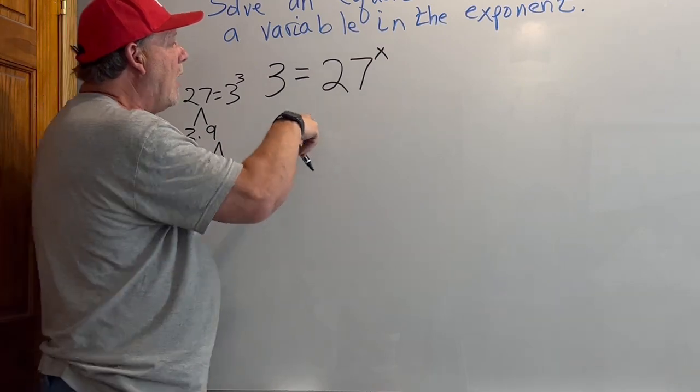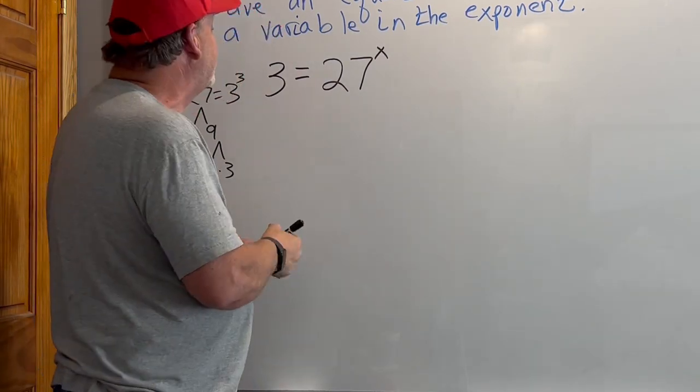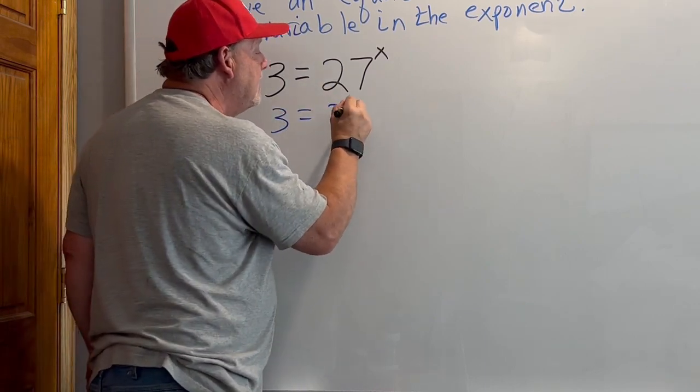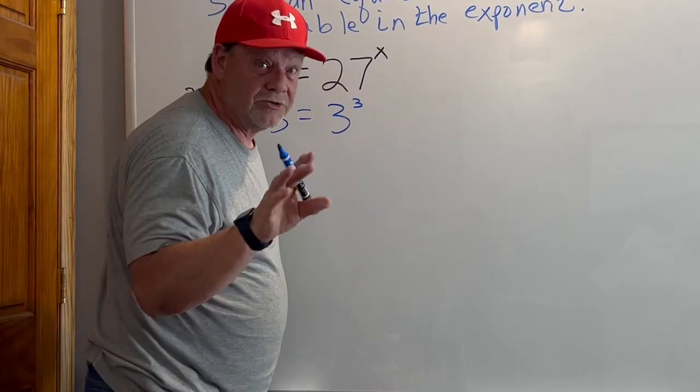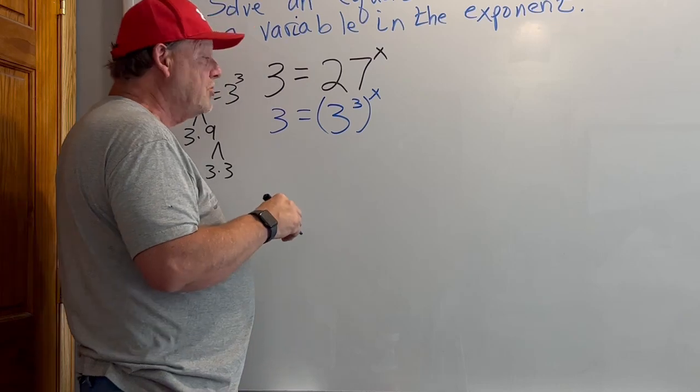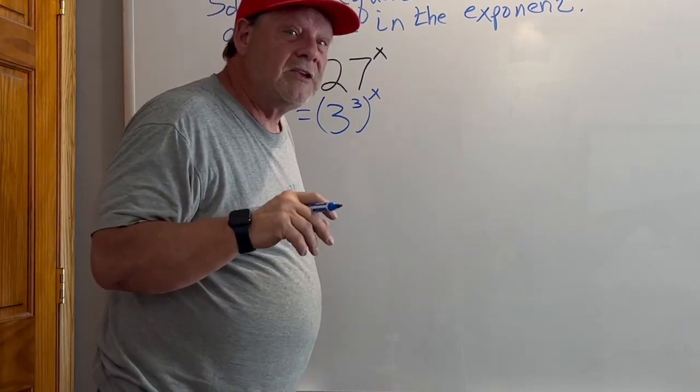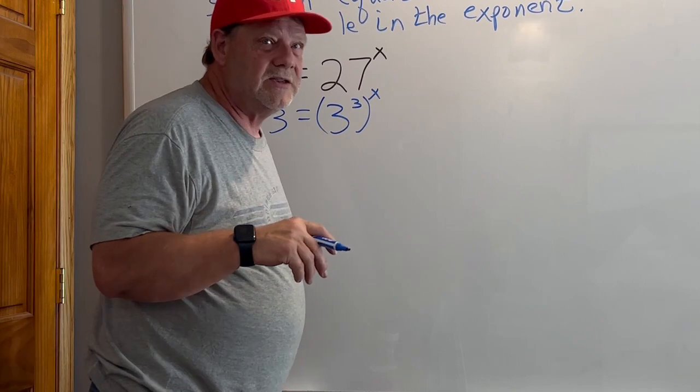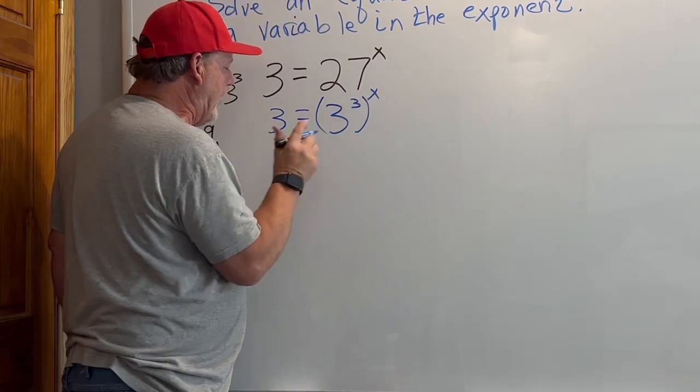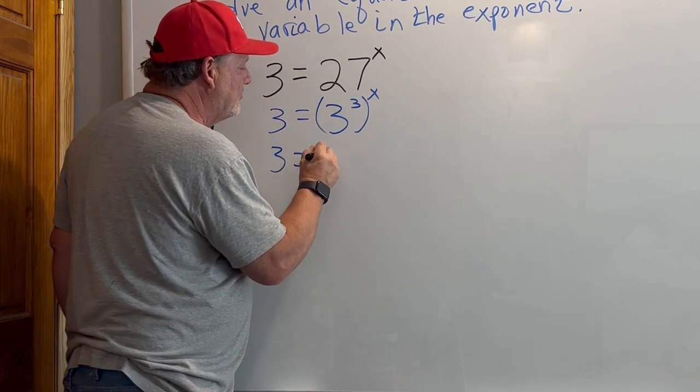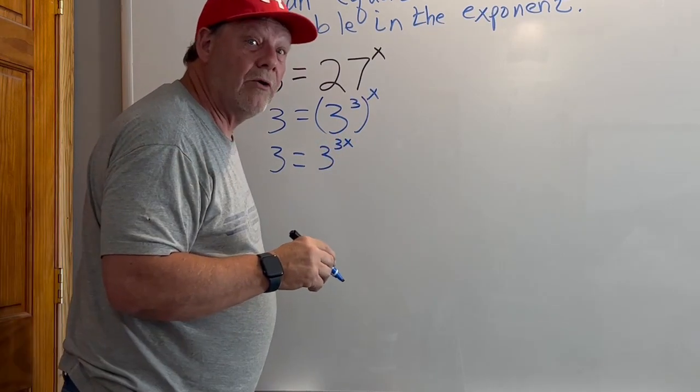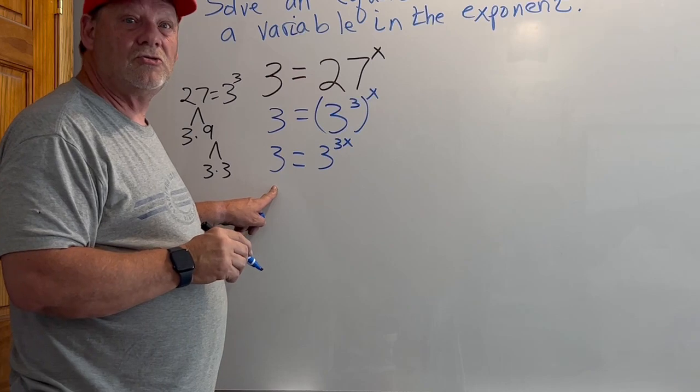So I can rewrite this with the same base. I'm going to write 3 to the third power because that's 27, and now raise it to the x power. The law of exponents, or law of indices—same thing—when you have a power raised to a power, you multiply them. So that's 3 to the 3 times x, which means 3 to the 3x power. What power is this 3 to? The first power.